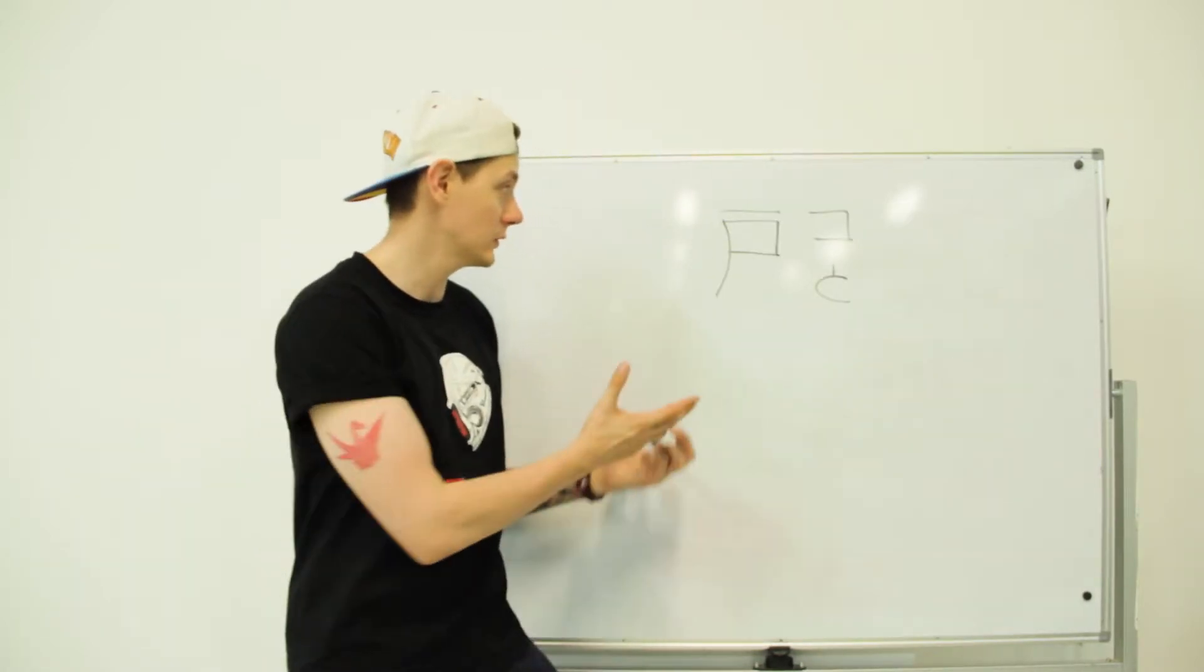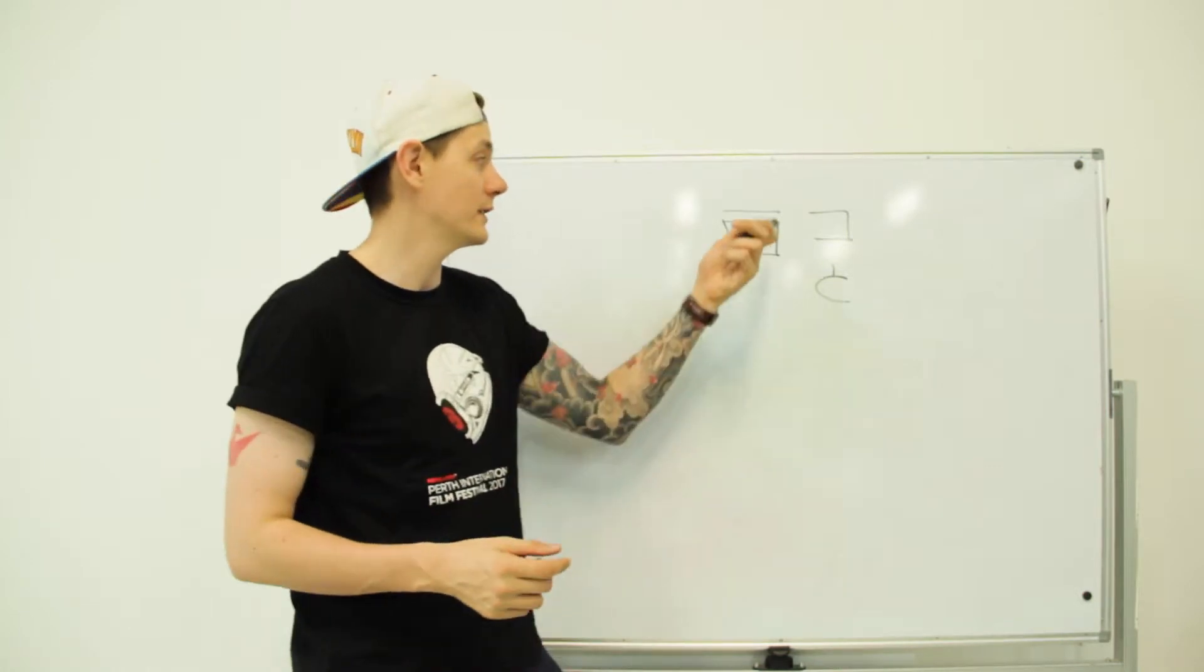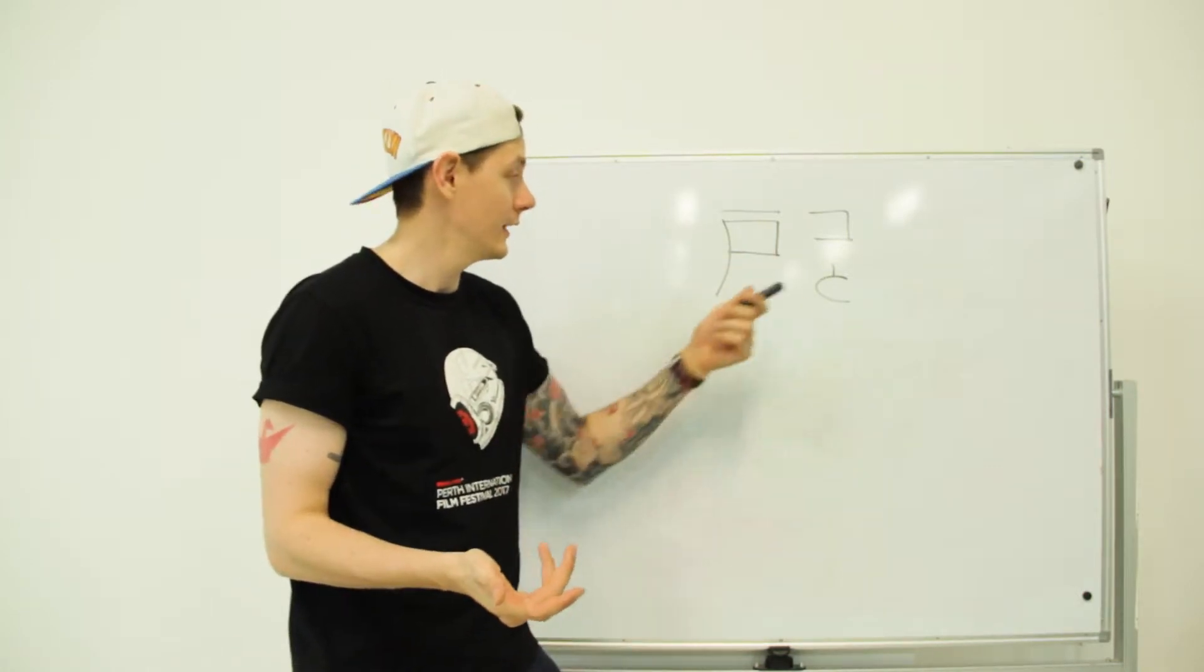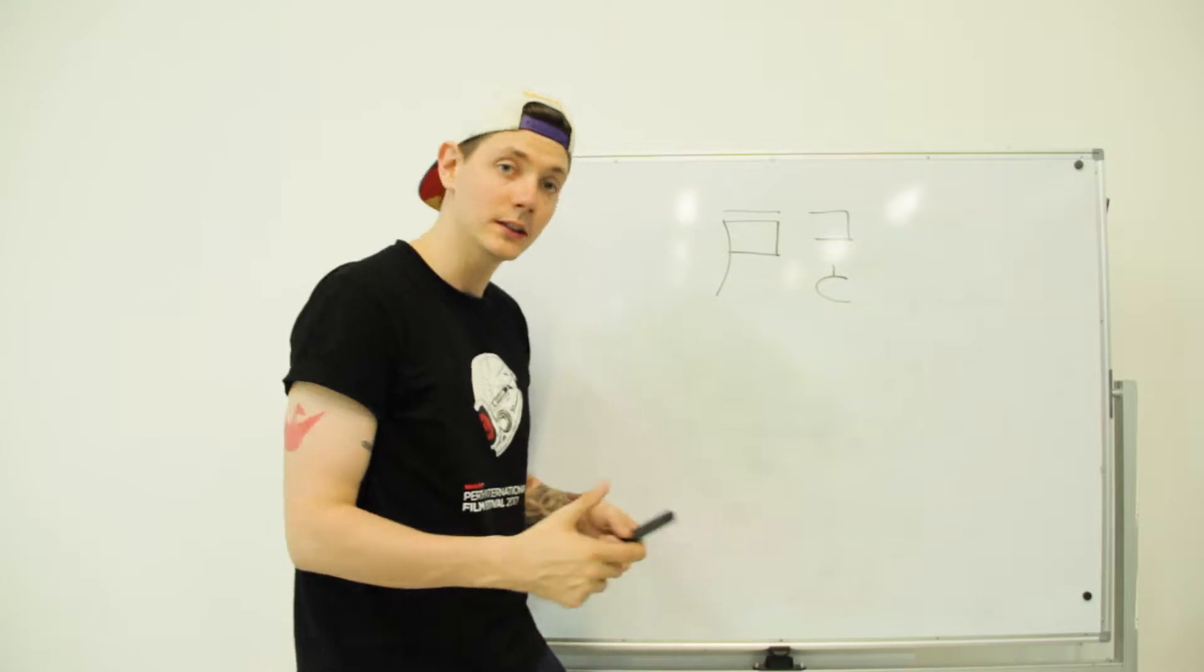Next up we have the Kanji for door. It's quite a simple shape. The onyomi reading is ko, which is like a counter for houses. Kunyomi reading is to, to meaning door in Japanese.